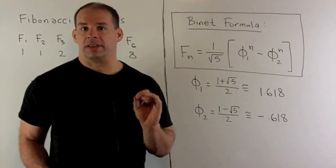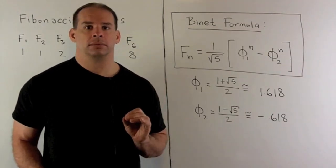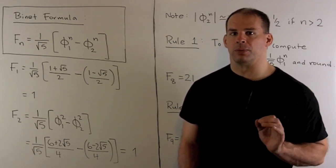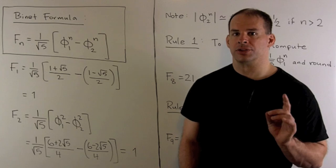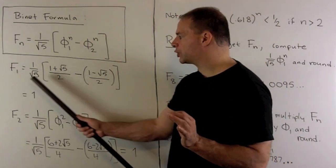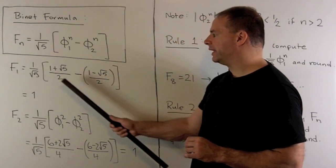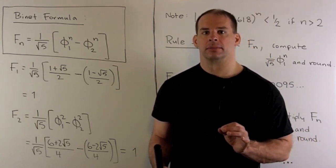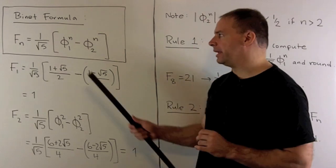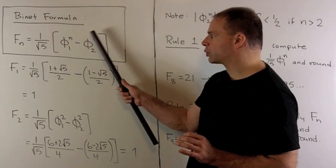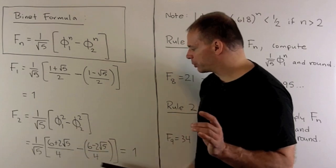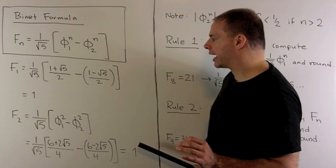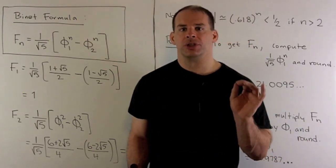Let's take a look at a few examples before we get to the linear algebra. First, let's verify that F1 and F2 are equal to 1 using our formula. If I let n equal 1, this expression collapses to a square root of 5, so we get 1 — that checks. Then if I let n equal 2, we work out both squares, that also collapses to a square root of 5, and again a 1 comes out. So F1, F2 — check.